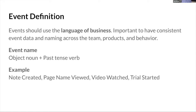Events should use the language of the business — the way your product manager, your CEO, and your customers refer to these events is how you should name them. They shouldn't be technical jargon. We recommend putting them into object-verb format: note created, page name viewed, video watched, trial started. Notice these are all past tense. It's really important to have consistency here; otherwise you end up with duplicate events and all sorts of messes to clean up later.